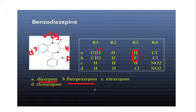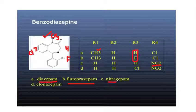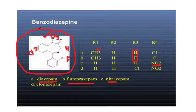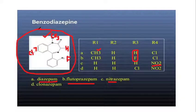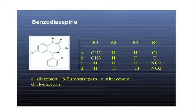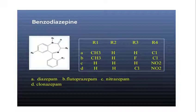What is nitrazepam and clonazepam? For nitrazepam, at position 4 (R4) we have a nitro group present. By substituting different groups on the simple benzodiazepine ring, we get different drugs. From a pharmacology point of view, these have different durations of action, and it is just the substitution of groups.